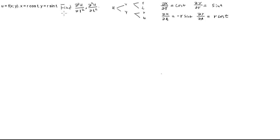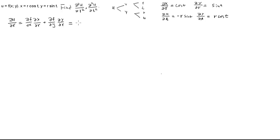Now let's find the first-order derivative. We need ∂u/∂r first. According to the chain rule, that's the derivative of f with respect to x times ∂x/∂r, plus the derivative of f with respect to y times ∂y/∂r. We use the symbol f rather than u just for convenience. Plugging in the values, we get f_x·cos(t) + f_y·sin(t).